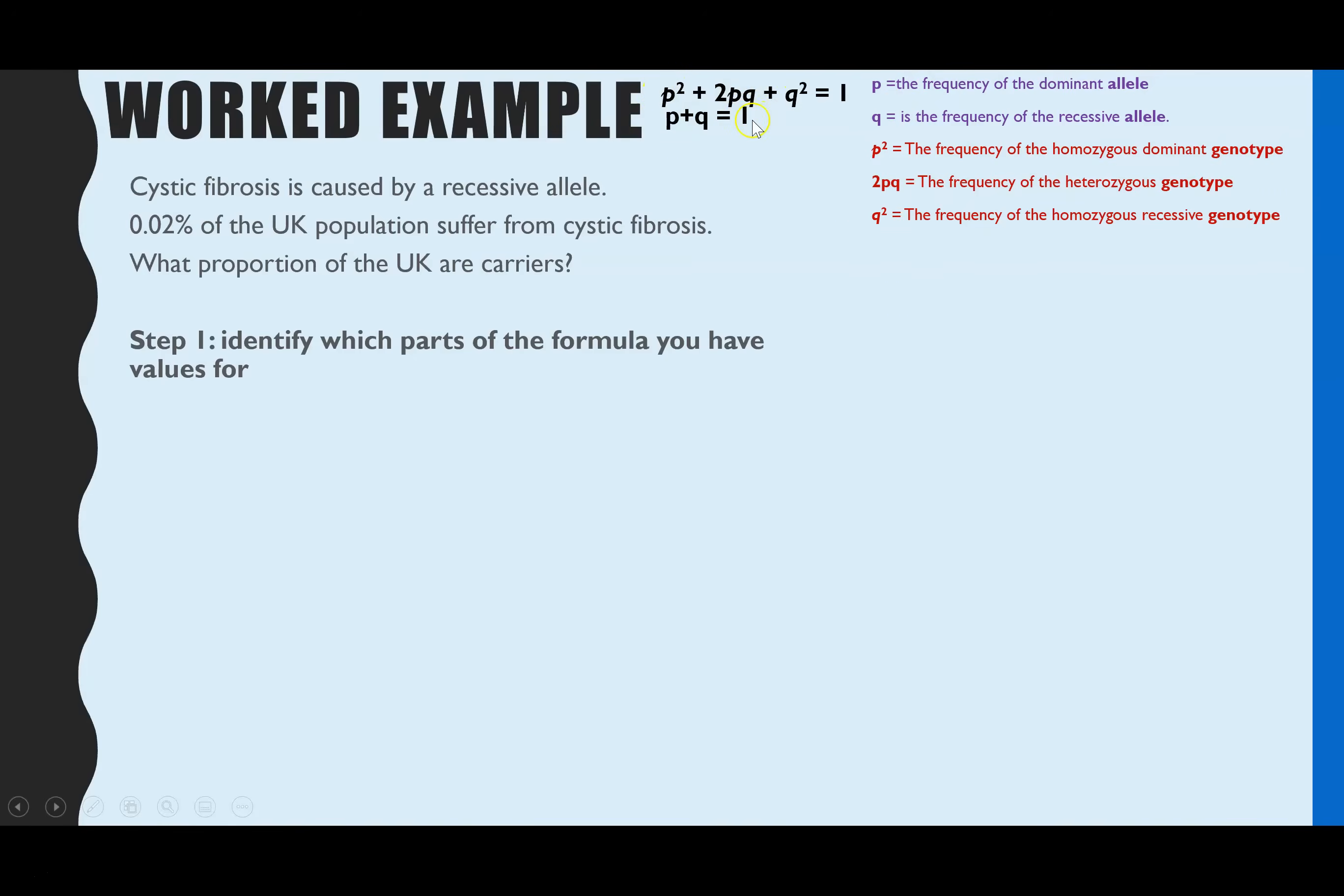It's worth noting as well that you will not be given these formulas in the AQA exams. You are expected to remember those two formulas and what they represent. So the more times you write it down, the stronger your memory of it should be. We need to work out what we've been given information for. 0.02% of the population have cystic fibrosis. Now, if they are suffering from cystic fibrosis and it's caused by a recessive allele, they must have two copies of the allele to have that phenotype. So their genotype must be homozygous recessive. That means 0.02% of the population are Q squared.